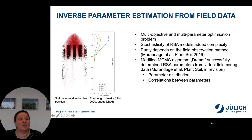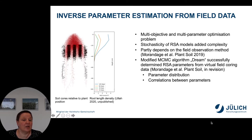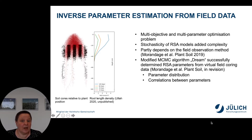Another way to parameterize root architecture is to use field data and inverse parameter estimation. On the image you see an example of a root system and five soil cores taken at different distances away from the center of the plant. From this information we can compute aggregated information such as root length densities, which can be compared to field data from soil coring. The parameter estimation is a multi-objective and multi-parameter optimization problem, and the stochasticity of the root system architecture model adds complexity.